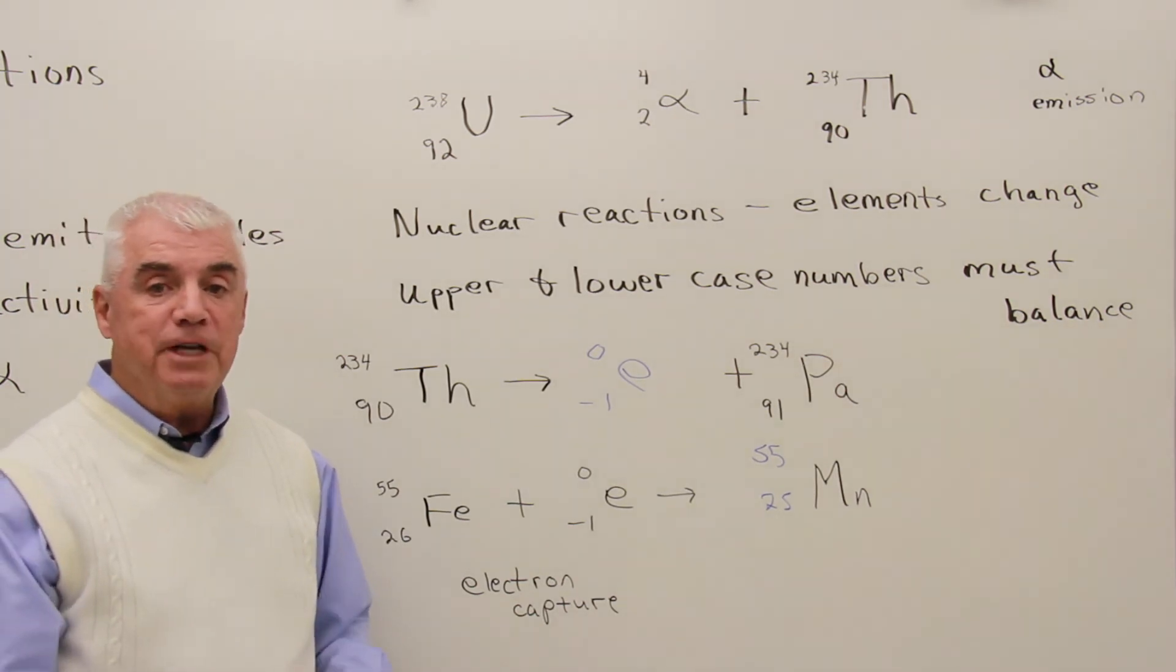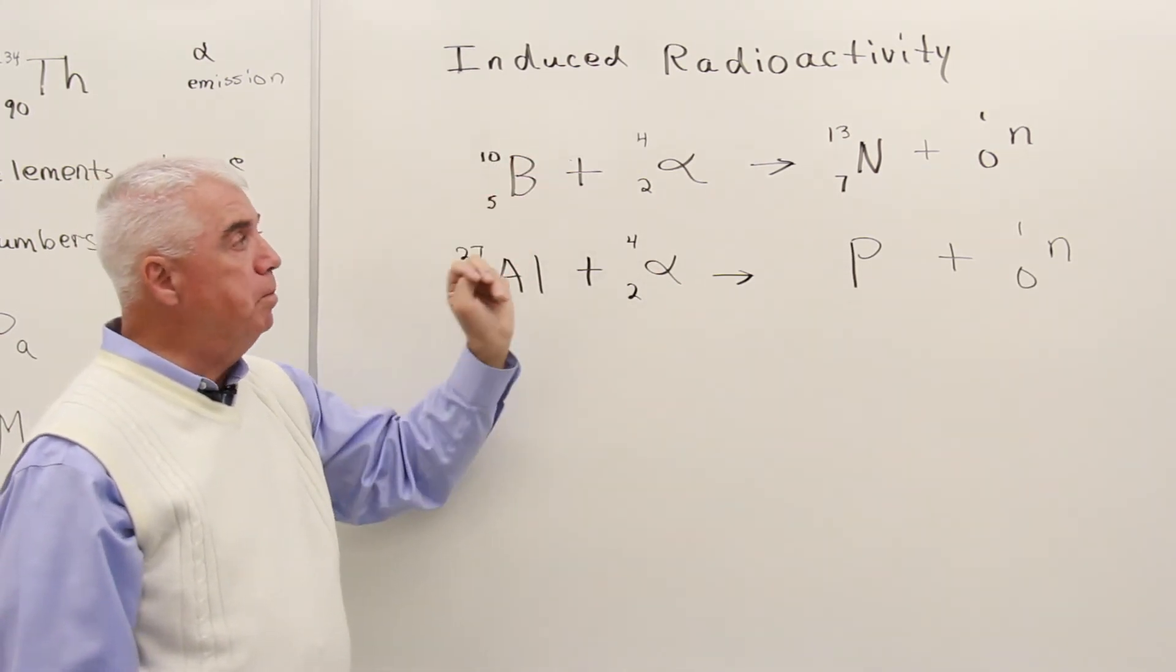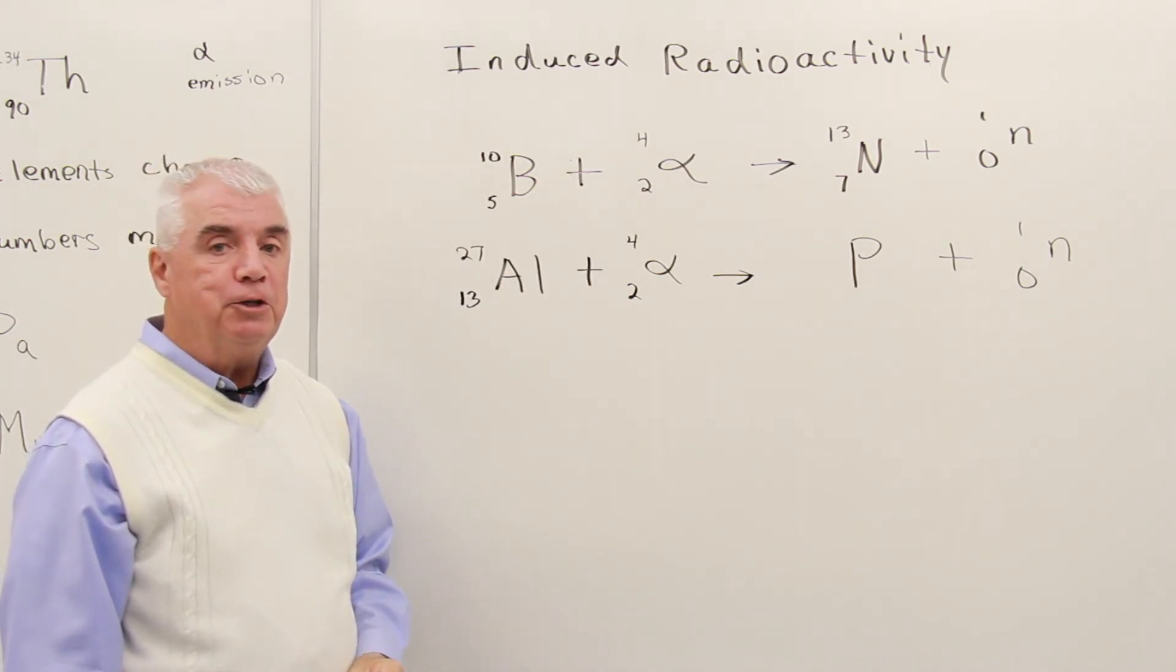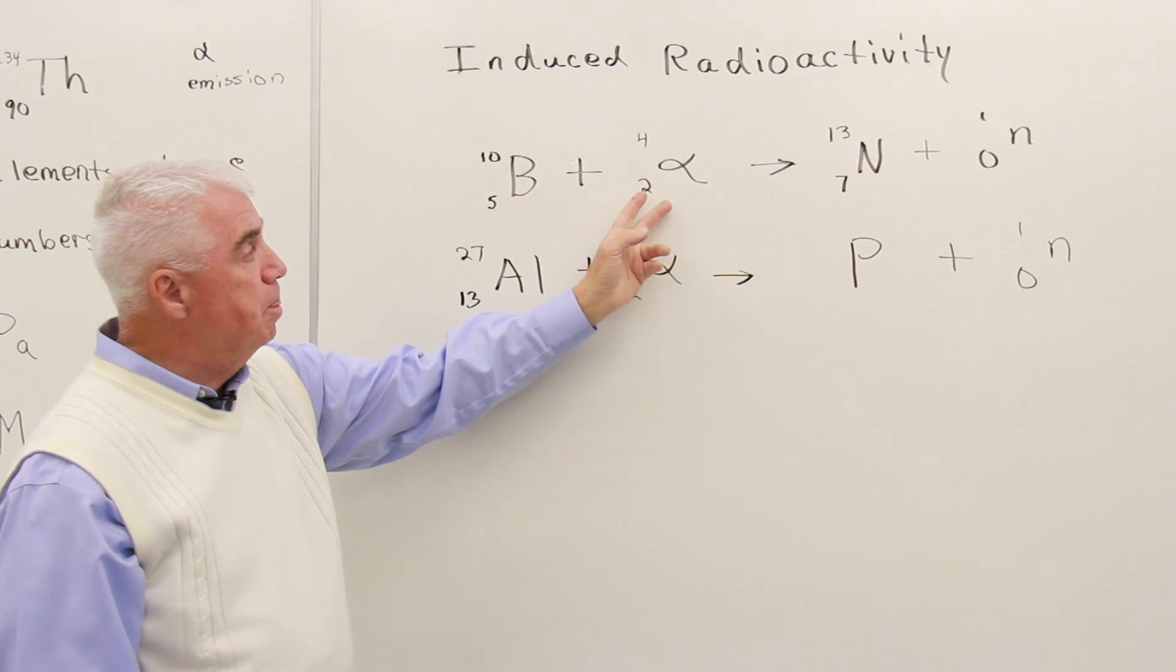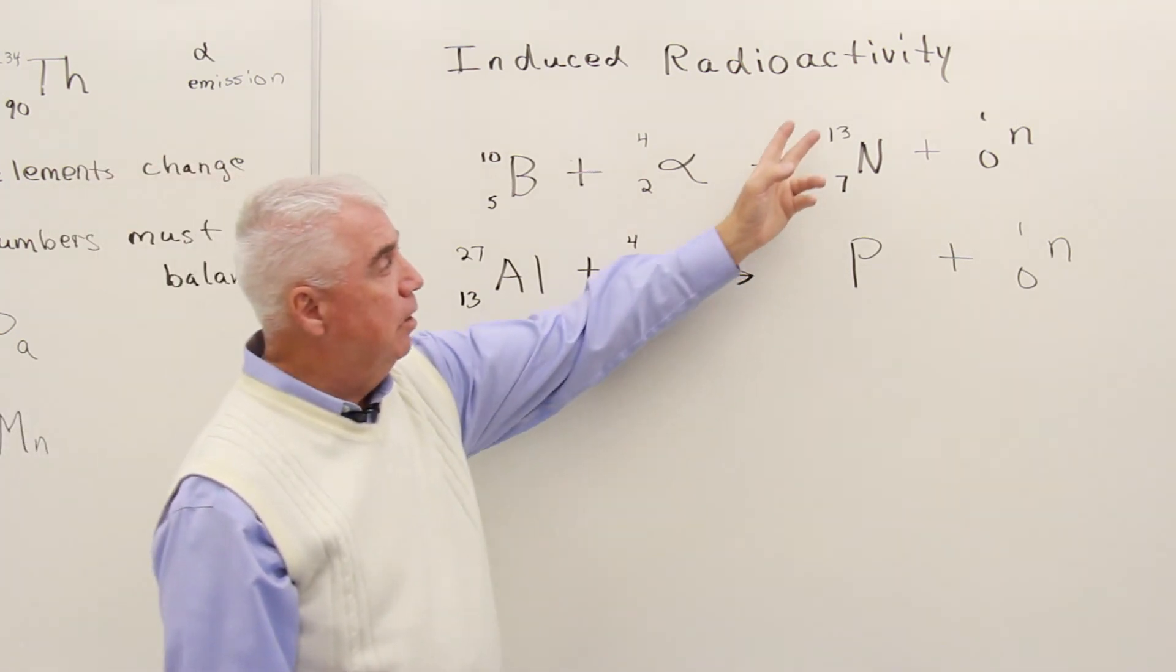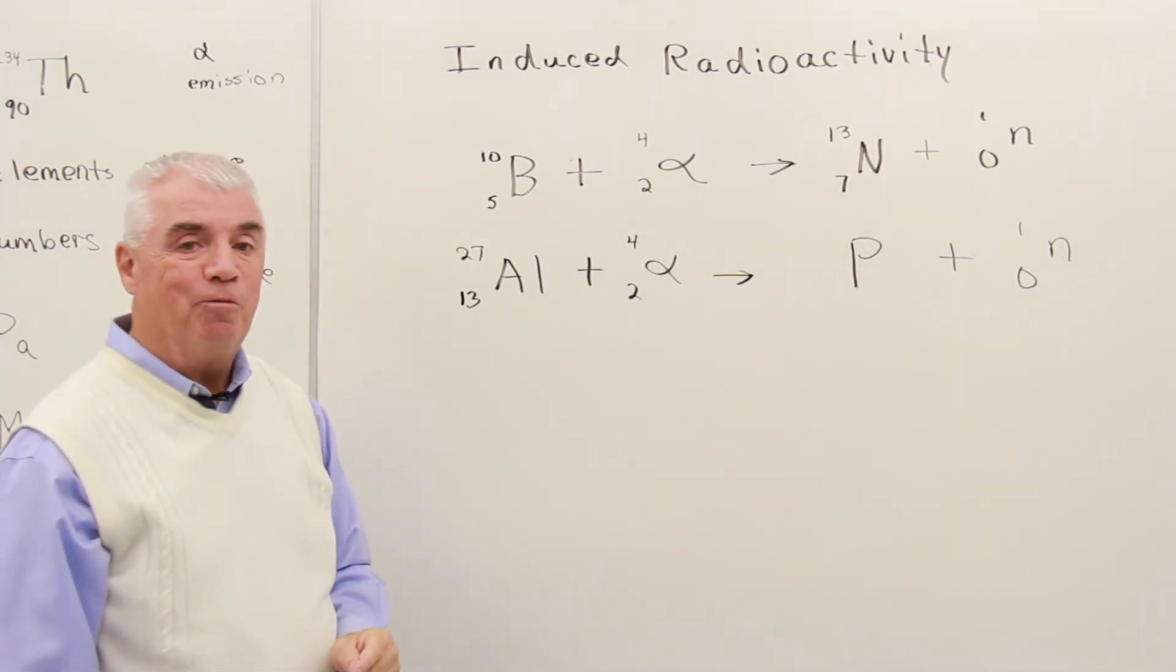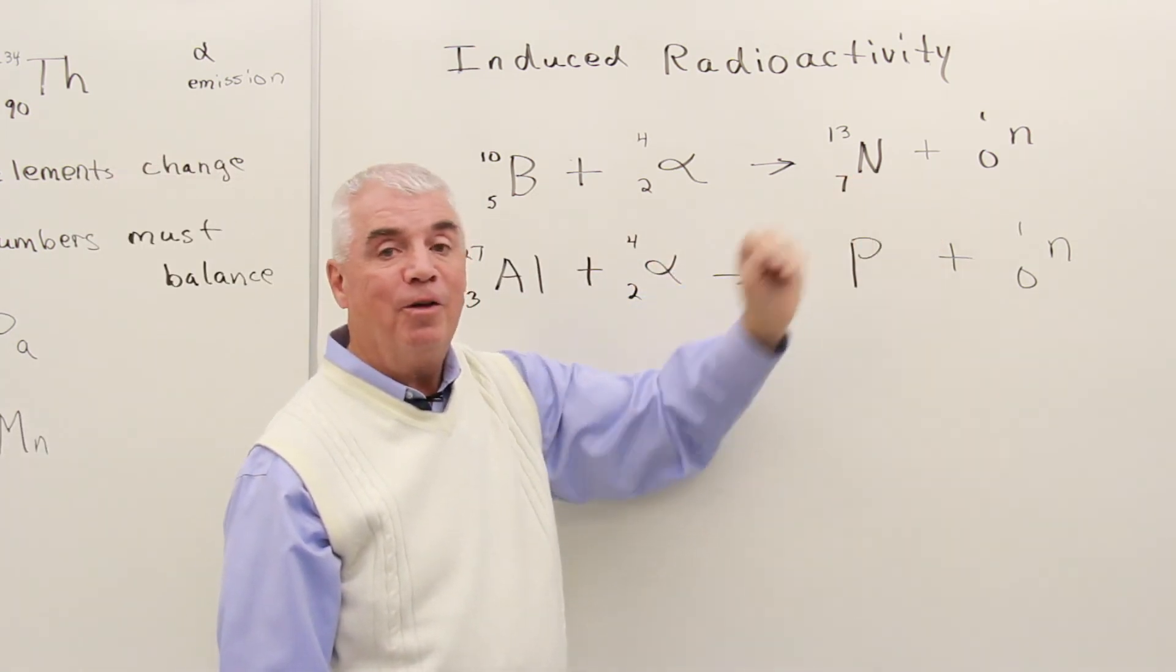Let's look at another type of nuclear process. Sometimes it's possible to bombard an isotope with a particle and cause a nuclear transformation. This is referred to as induced radioactivity. So here I've got a boron isotope. We're colliding it with an alpha particle. Sum of the uppercase numbers here on the left is 14. Over here we get a nitrogen isotope plus a neutron. Uppercase numbers 14. The lowercase numbers 7, 7 and 0. It balances.